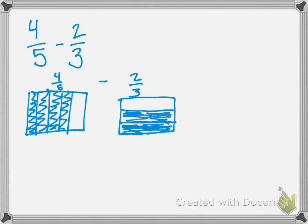For our 4 fifths, we're going to give it the thirds lines. And then for the 2 thirds, we're going to give it the fifths lines. In each rectangle we now have 15 sections. In the first one we colored in 12 sections.